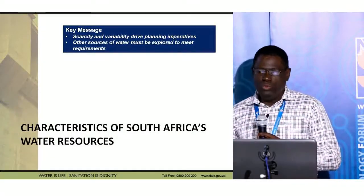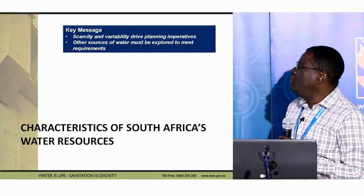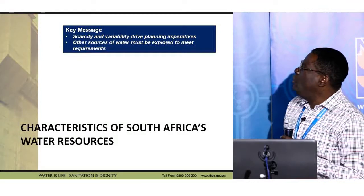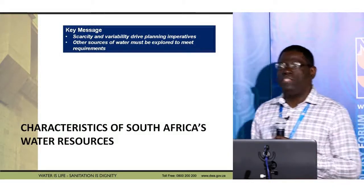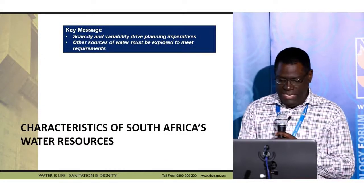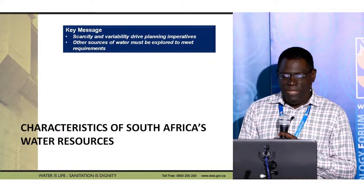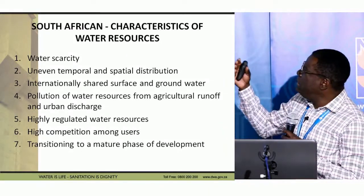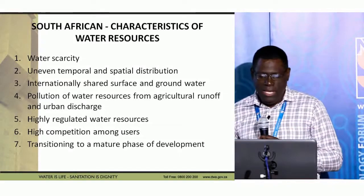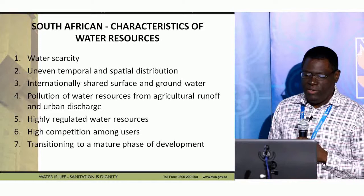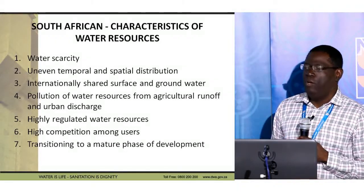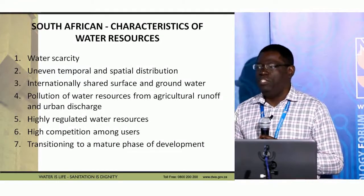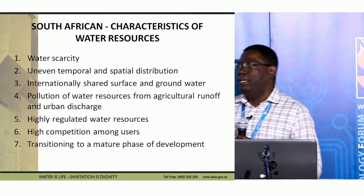The key message is that South Africa is a water scarce country, and one of the options is that we must explore other sources of water for further development and to supplement what we have. I raise seven points regarding the characteristics of our water resources: water scarcity, the temporal nature and spatial distribution, internationally shared water, pollution, regulated water resources, competition among users, and the transition we are currently seeing.